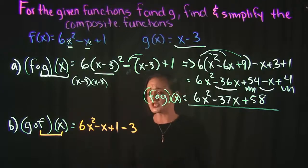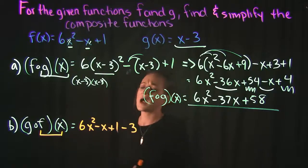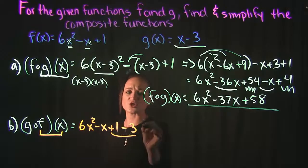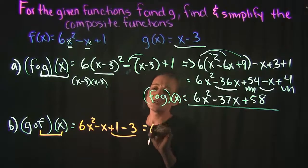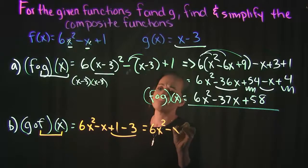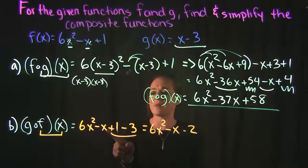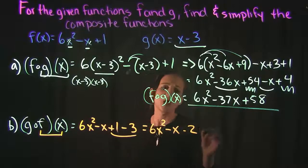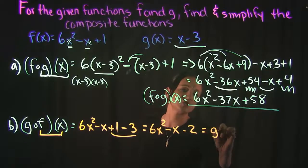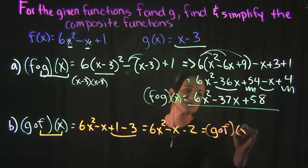So there's not much simplifying that we can do here. There's no multiplying. The only thing that we can do is combine these like terms back here in the end. So giving us 6x squared minus x and then now minus a 2 when we combine the 1 minus 3. That is what g of f of x is equal to.